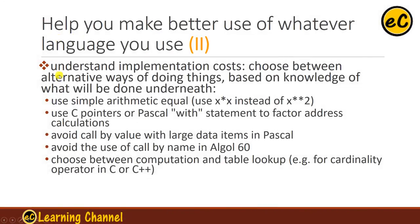The second advantage is to help you understand implementation cost — to choose between alternative ways of doing things based on knowledge of what will be done underneath. For example, using x times x instead of x to the power 2 will be faster, because it is a multiplication rather than a power function requiring calculations like Taylor's expansion. You can also use C pointers or Pascal's with-statement to factor address calculation, avoid call-by-value with large data items in Pascal, or choose between computation and table lookup — table lookup is sometimes faster but uses more memory, while computation is slower but smaller.